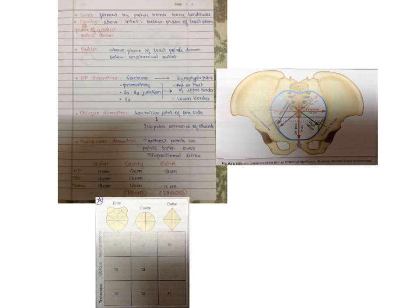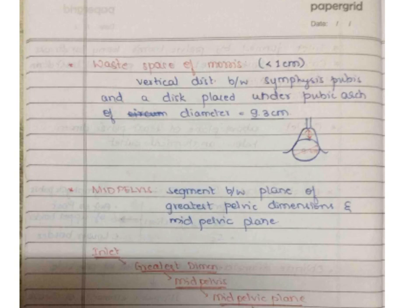The anteroposterior diameter of the anatomical outlet of the pelvis is 11.5 cm, while the transverse diameter of the anatomical outlet is 11 cm. The Waist space of Morris should always be less than one centimeter, measured by keeping three fingers below the pubic symphysis. It is defined as the vertical distance between the lower border of the symphysis pubis and a disc placed under the pubic arch with a diameter of 9.3 cm.